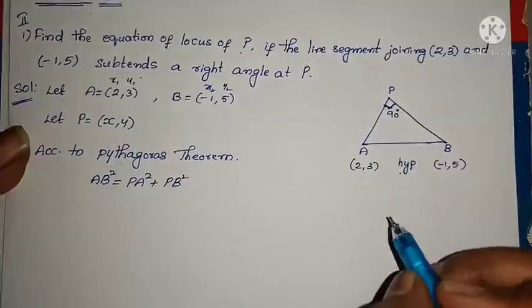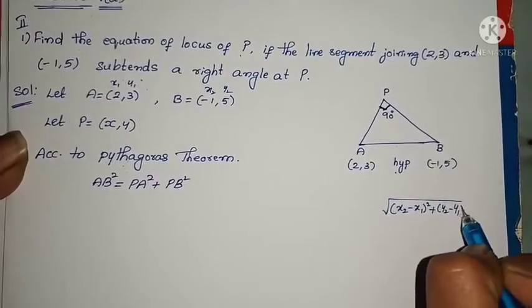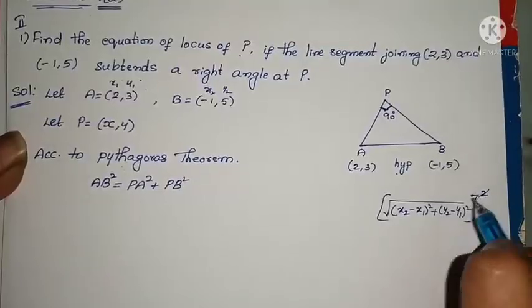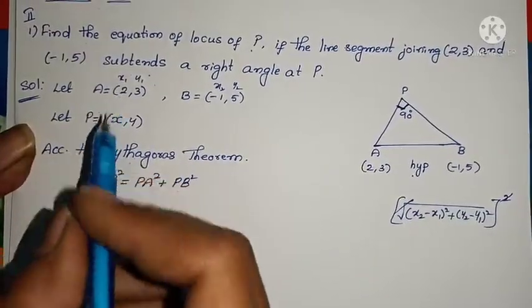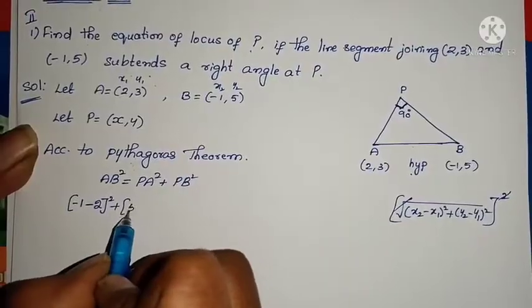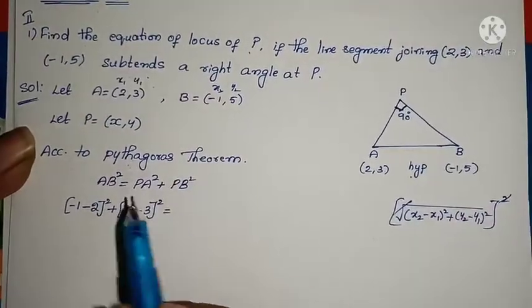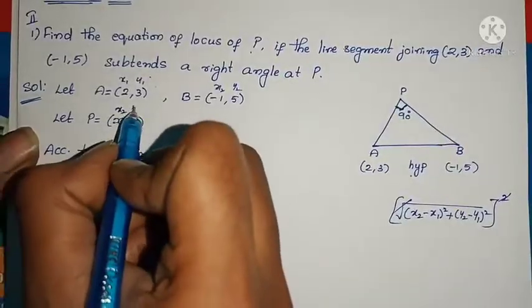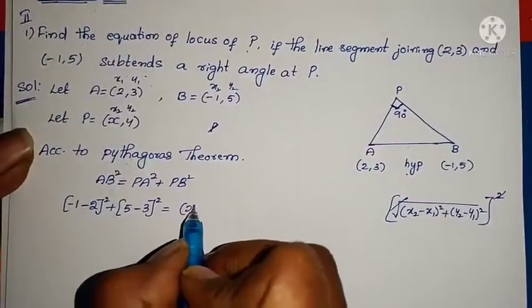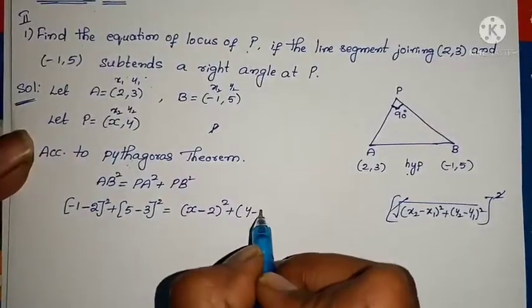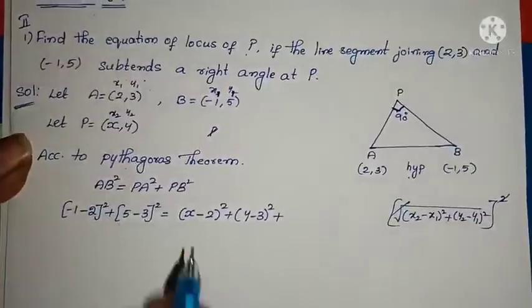We use the distance formula. Since angle APB is 90 degrees — a right angle — by Pythagoras theorem, AB² = PA² + PB².